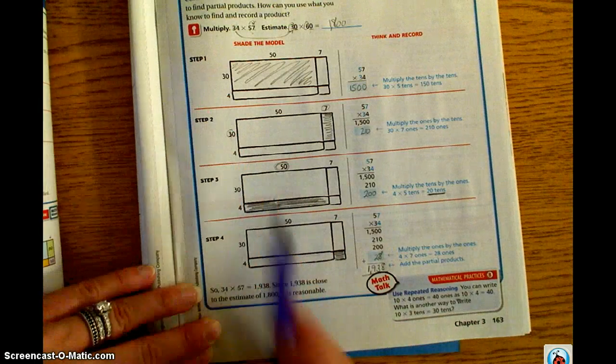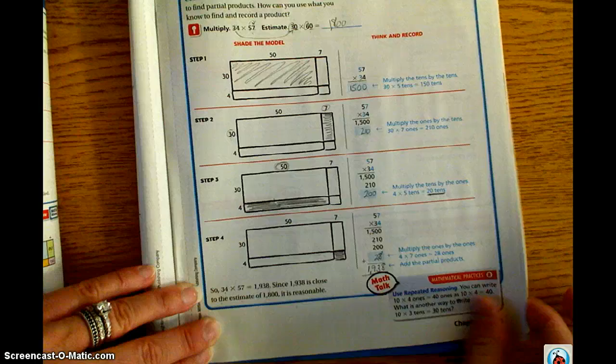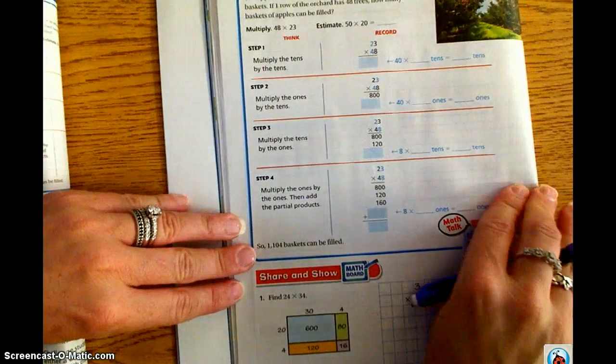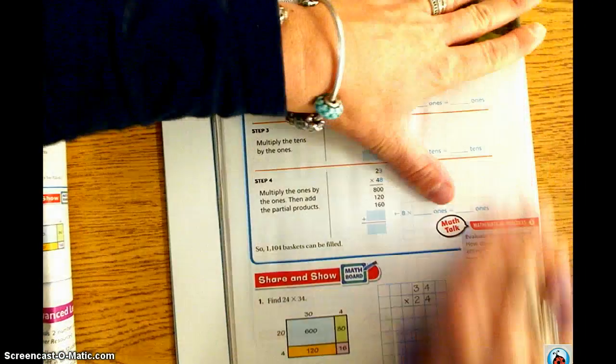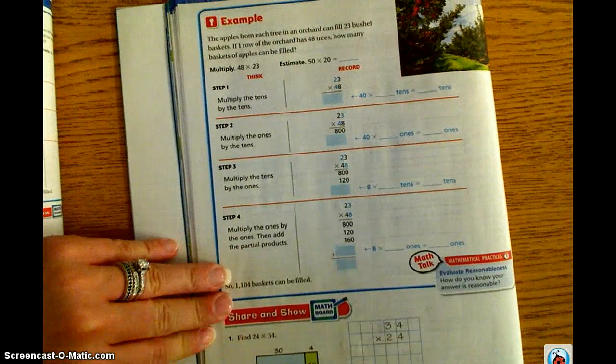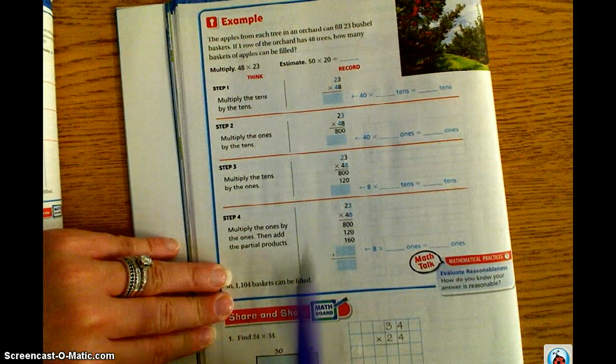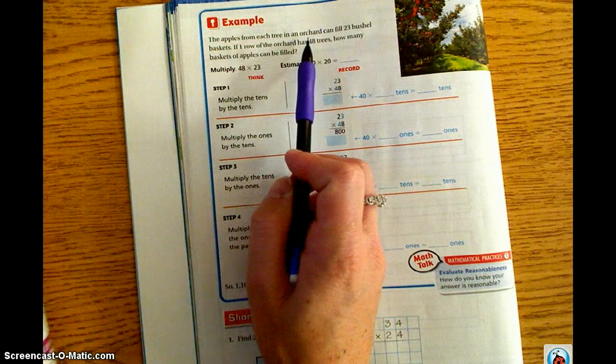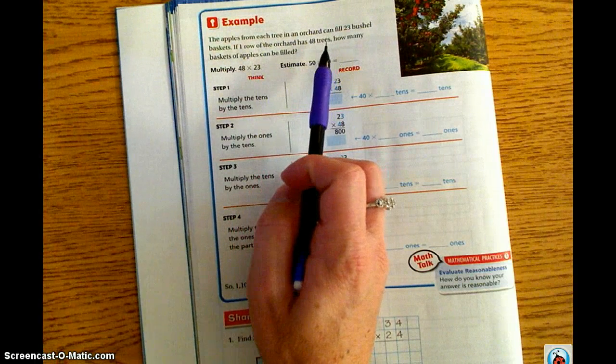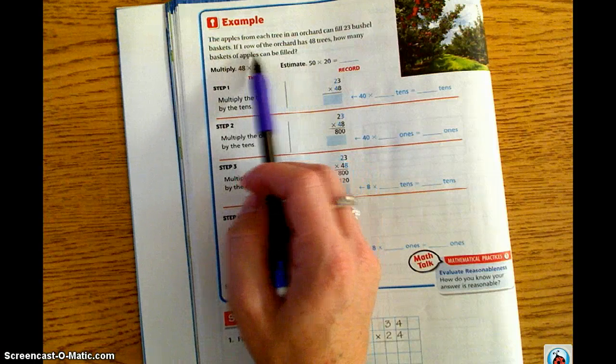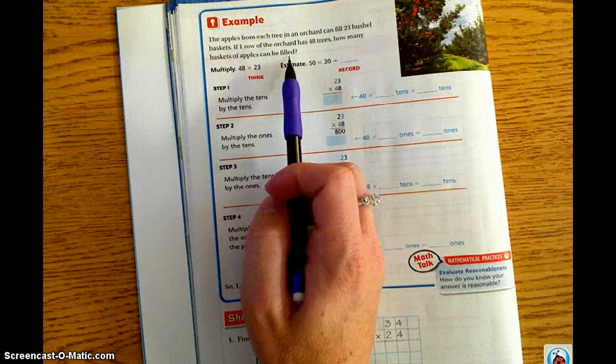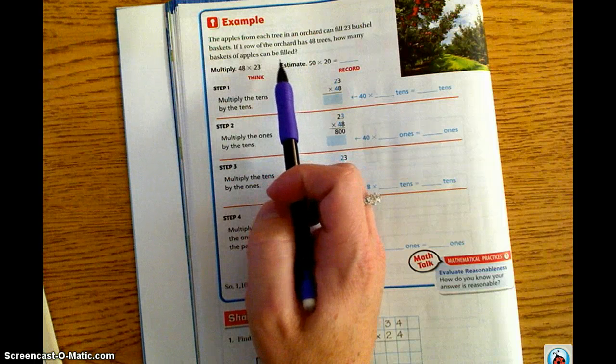After you have completed unlock the problem, you need to move on to page 164. And we are actually going to go through another example together. So, on this page, there is a second example. At the top, it says, the apples from each tree in an orchard can fill 23 bushel baskets. If one row of the orchard has 48 trees, how many baskets of apples can be filled?